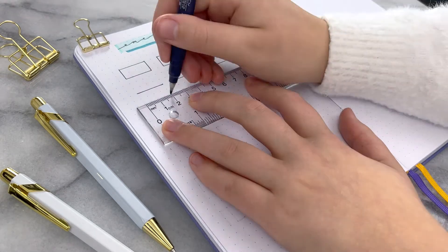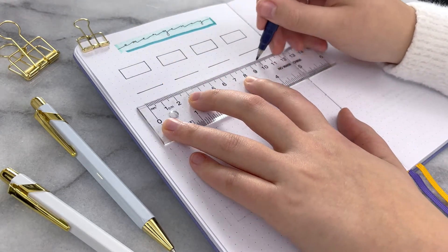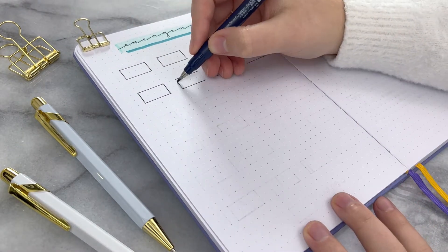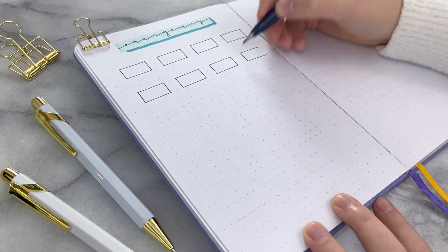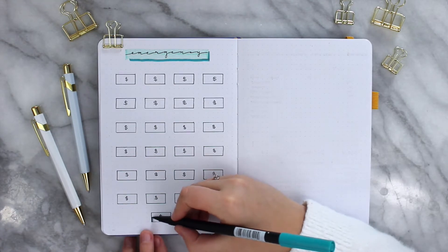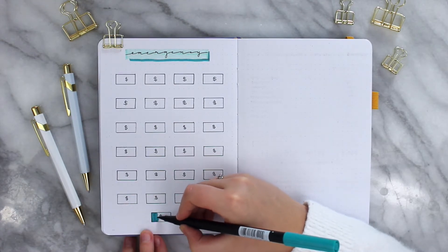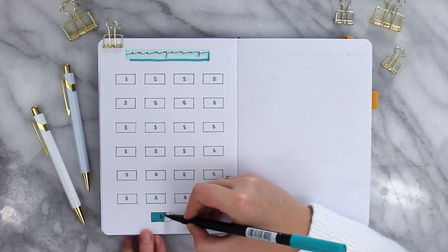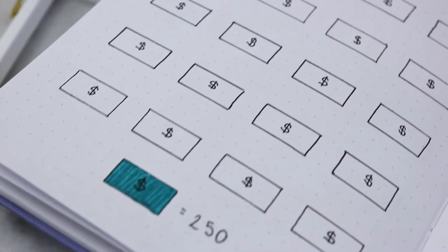I am dividing this spread into four little boxes across and then six boxes down. Each of these boxes are four dots across and two up. And I added a little bit of money signs in the center just because these are the bills that we are saving up for.